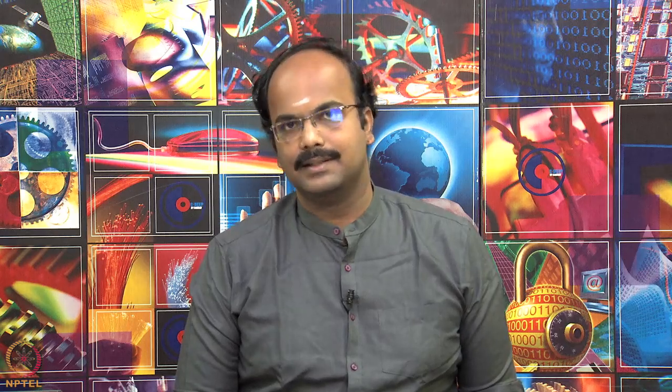In this lecture we will discuss about the geometrical characteristics of the images acquired by synthetic aperture radar systems. Geometrical characteristics of an image basically means what sort of distortions may occur and how features may appear. We are going to discuss briefly about that.